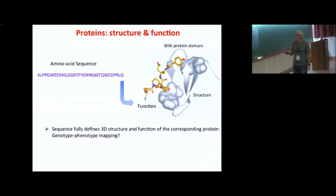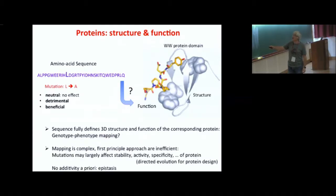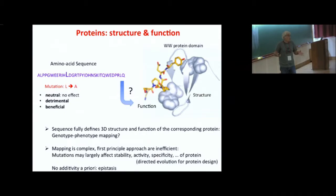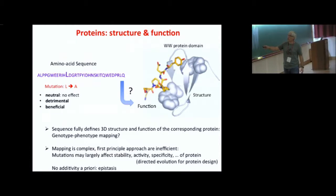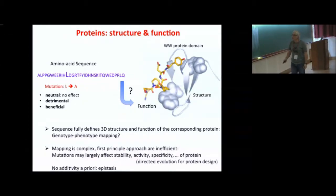This is not an easy question because if you do one single mutation — change, for instance, a leucine into an alanine somewhere along the chain — then sometimes a total disaster happens: the structure is completely lost, all properties are lost, and the protein is not functional anymore. Many times, nothing seems to happen — that's called a neutral mutation. And sometimes it's a beneficial mutation in the sense that the affinity, the binding constant, will be larger after mutation than before. So mutation can have dramatic effects, and the mapping between sequence and function — called the genotype-phenotype mapping — is very complicated.